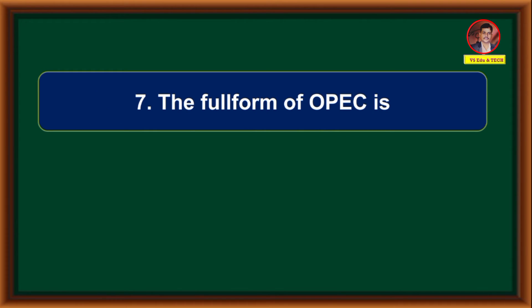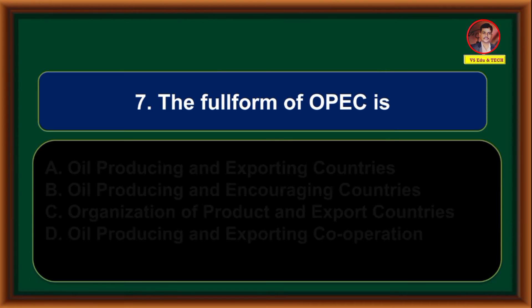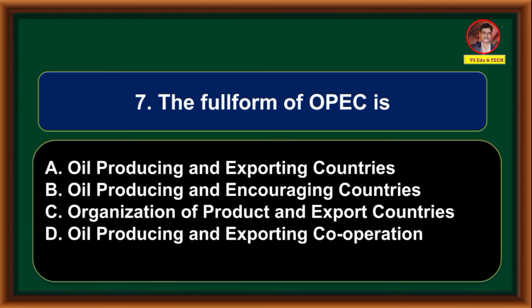The full form of OPEC is: Option A: Oil Producing and Exporting Countries. Option B: Oil Producing and Encouraging Countries. Option C: Organization of Product and Export Countries. Option D: Oil Producing and Exporting Cooperation.